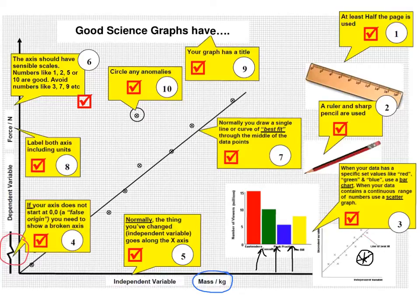Number seven, normally you draw a single line or curve of best fit through the middle of the data points. This is critical. The line of best fit should be smooth and drawn neatly. It could be a curve or it could be a line depending on the points you've plotted. You shouldn't try and swerve the line so that it hits everything. It doesn't necessarily have to hit everything, it has to be appropriate.